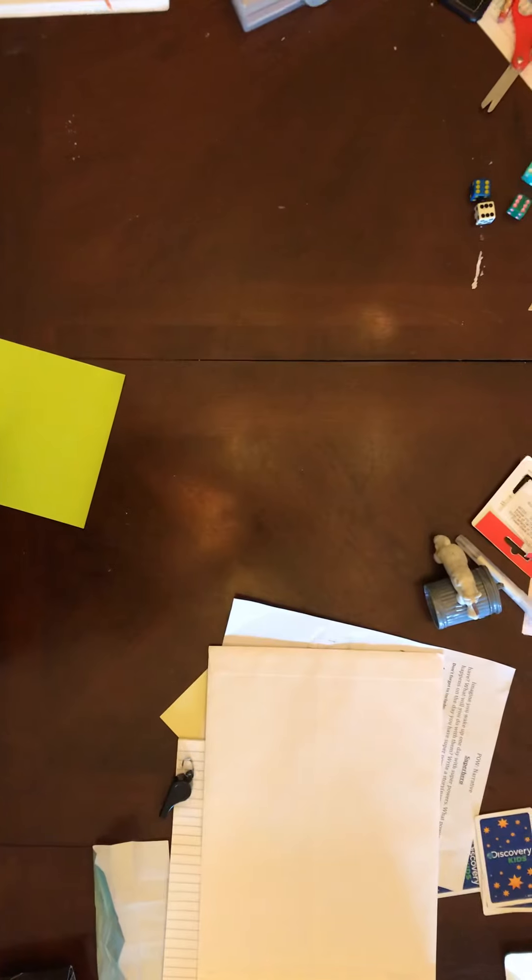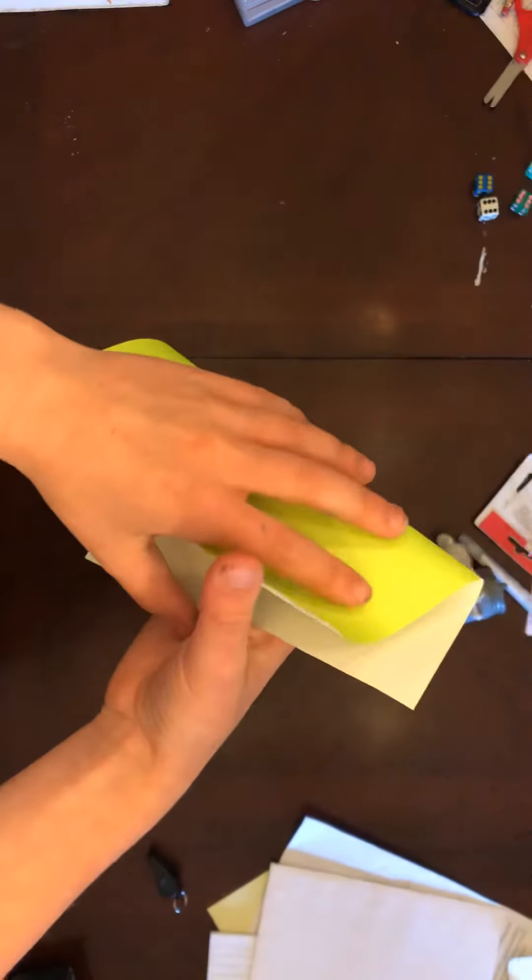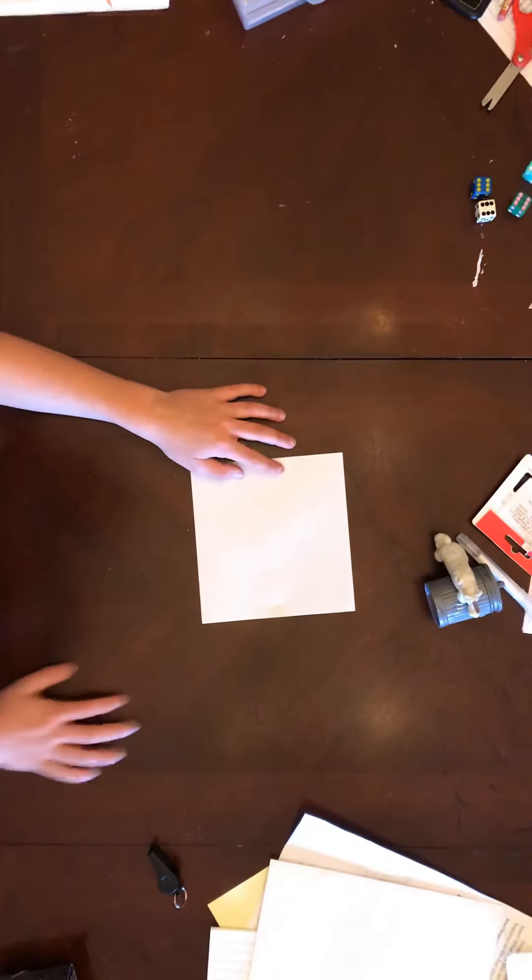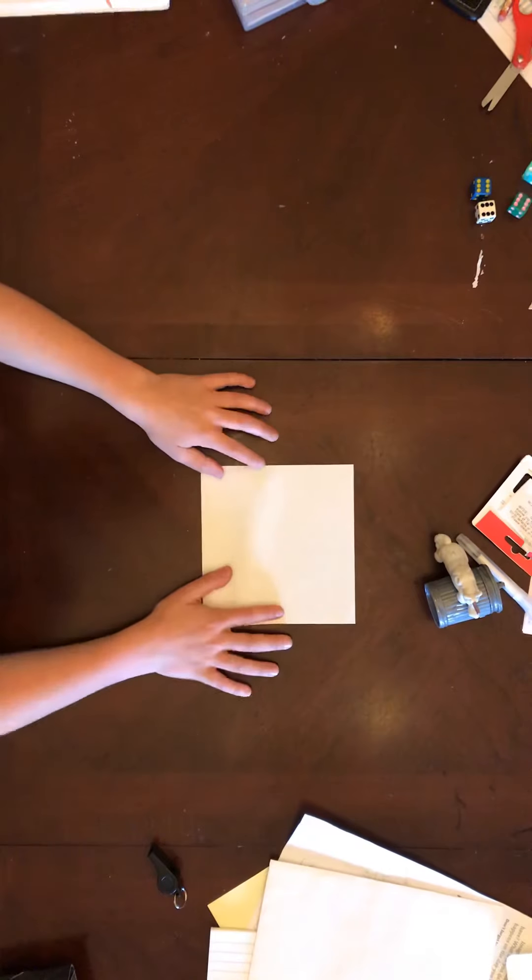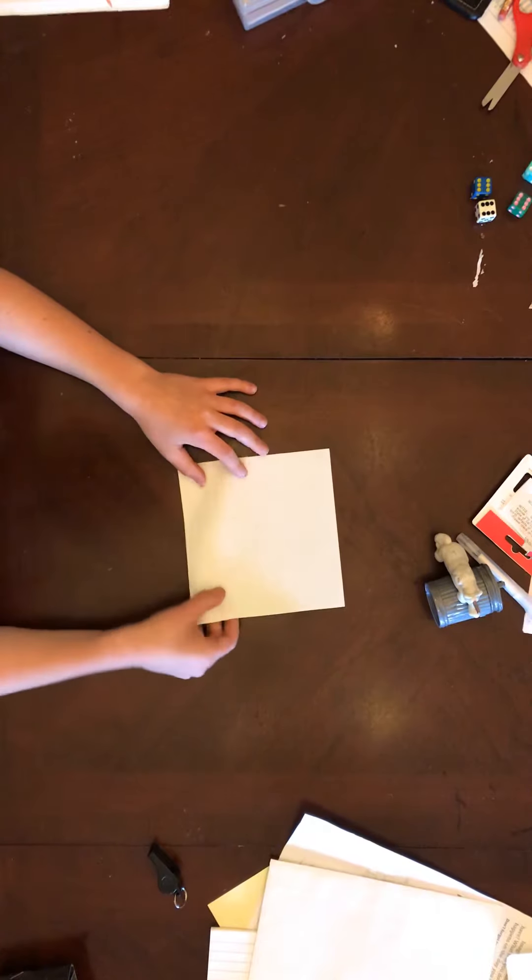This is actually neon yellow but it just looks like green. So the first step is to crumple your paper. I'm kidding, don't crumple your paper. The first step is to fold in half.